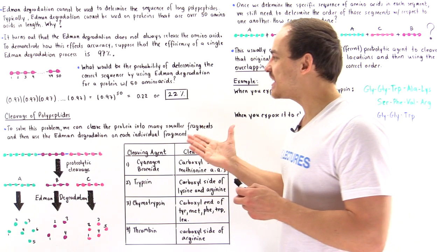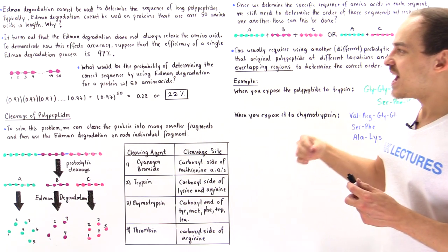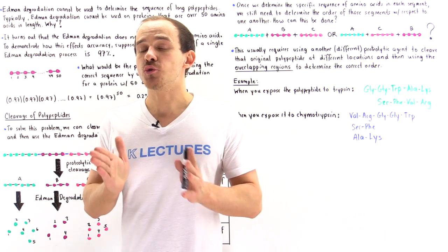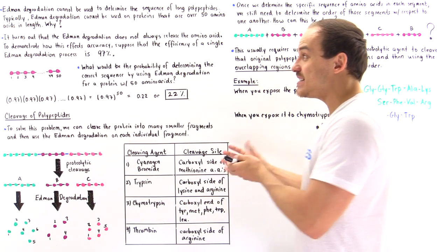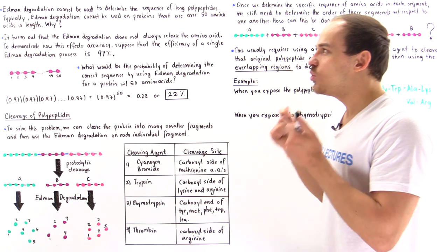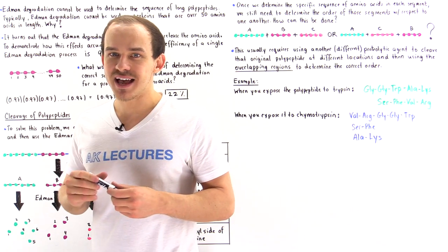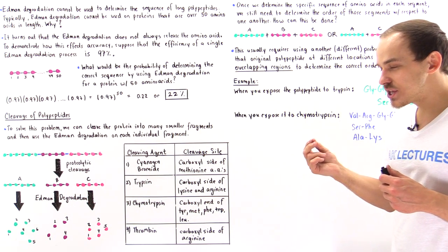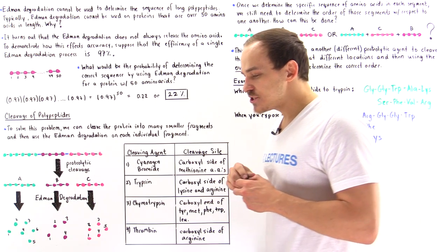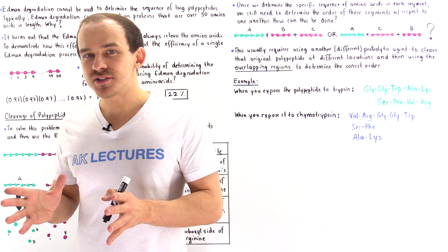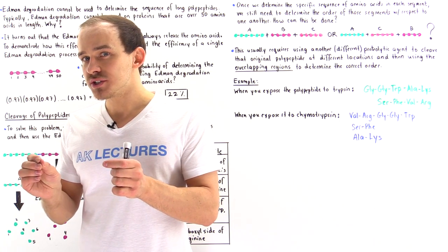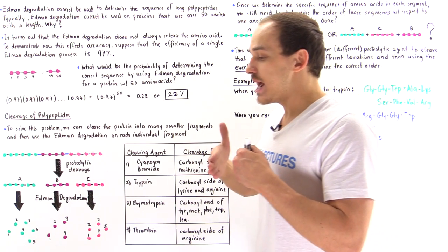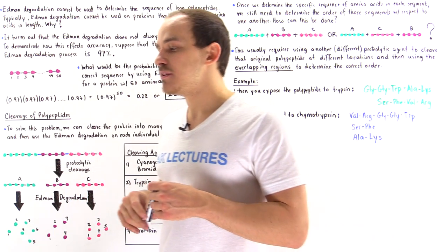That's a relatively small likelihood. It means there is a 78% chance that our sequence will not be the correct sequence of amino acids. We can see mathematically exactly why we cannot use the Edman degradation process on very long polypeptides — it becomes pretty inaccurate pretty quickly as the number of amino acids in the polypeptide increases.